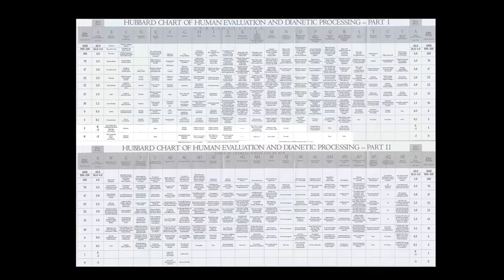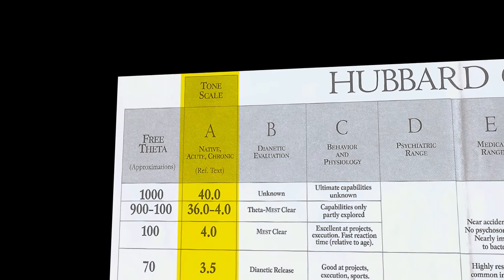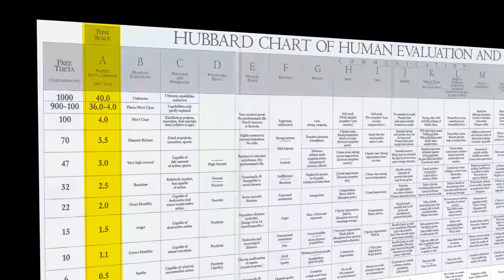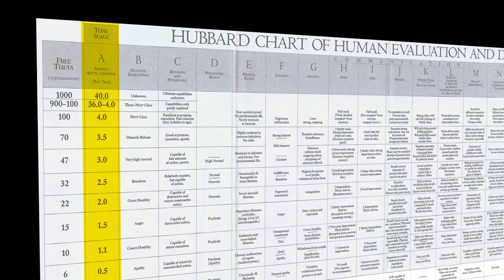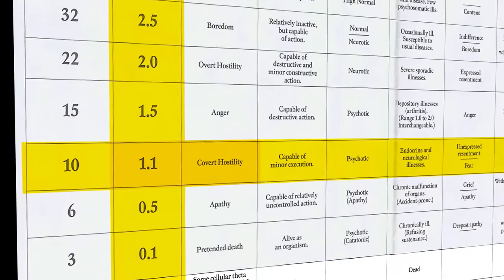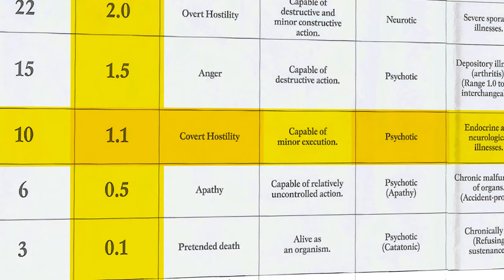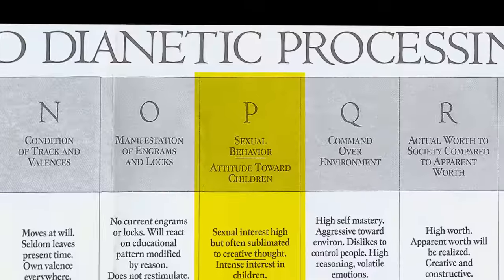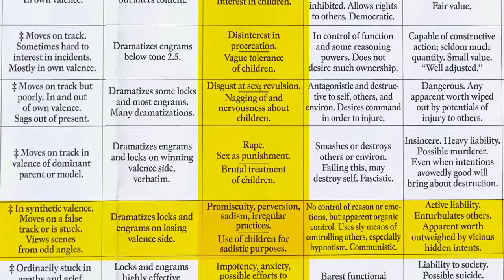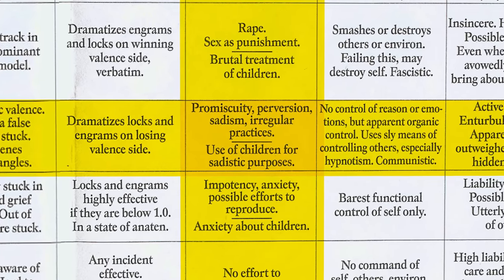If you go to another reference, the Hubbard Chart of Human Evaluation — which also contains the tone scale — it breaks down every element of life and your abilities in various areas according to your tone. At the 1.1 level on this chart, we find covert hostility and they are deemed psychotic. And if you go to column P — the sexual behavior and attitude towards children — L. Ron Hubbard states you will have promiscuity, perversion, sadism, irregular practices.